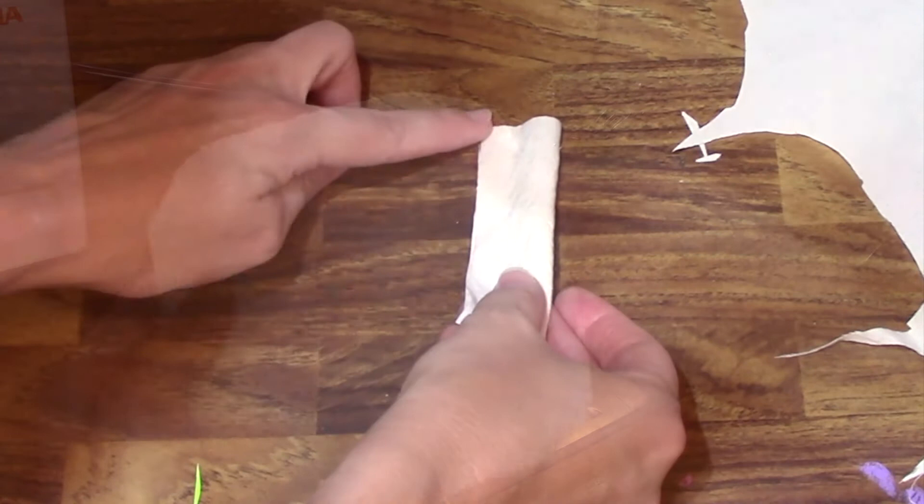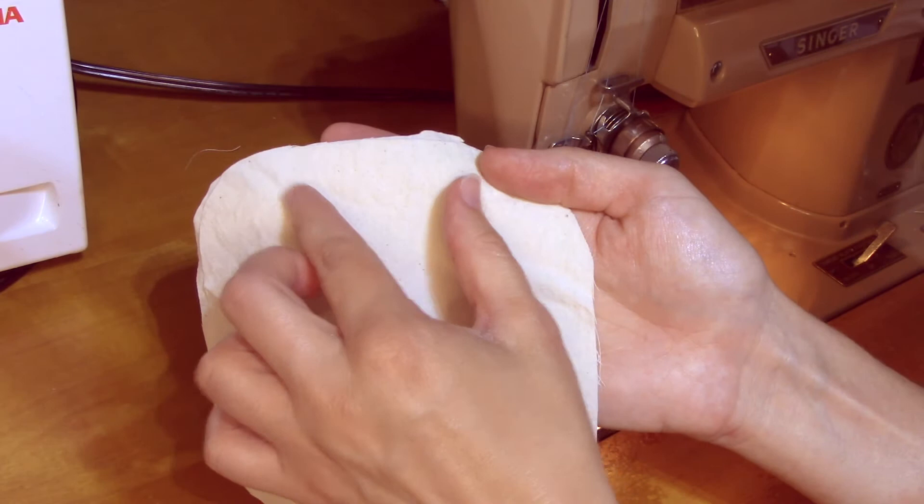Now with the right sides together, stitch around the edge using a three-quarter inch seam allowance. Leave an opening at the top edge a couple inches wide.